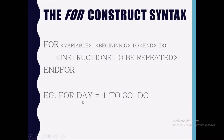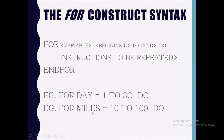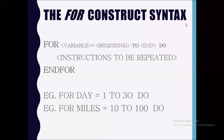Example: FOR day = 1 TO 30 DO — this algorithm would loop thirty different times. Next example: FOR miles = 10 TO 100 DO. We are not always going to start at one or zero; you can start at whatever figure you want. You could also have FOR day = 30 TO 1, so you can start at the highest figure — that gives you increment and decrement. FOR hours = 1 TO 24.